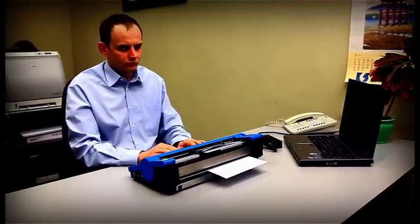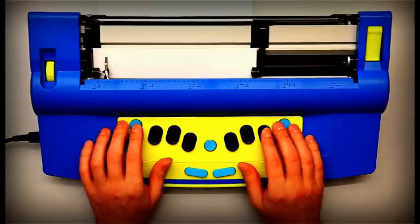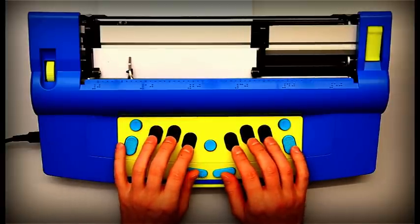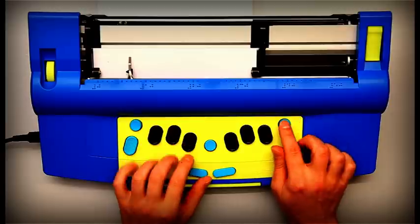Starting from the top, there are two round blue keys with a smooth recessed top: tab on the left and back tab on the right.